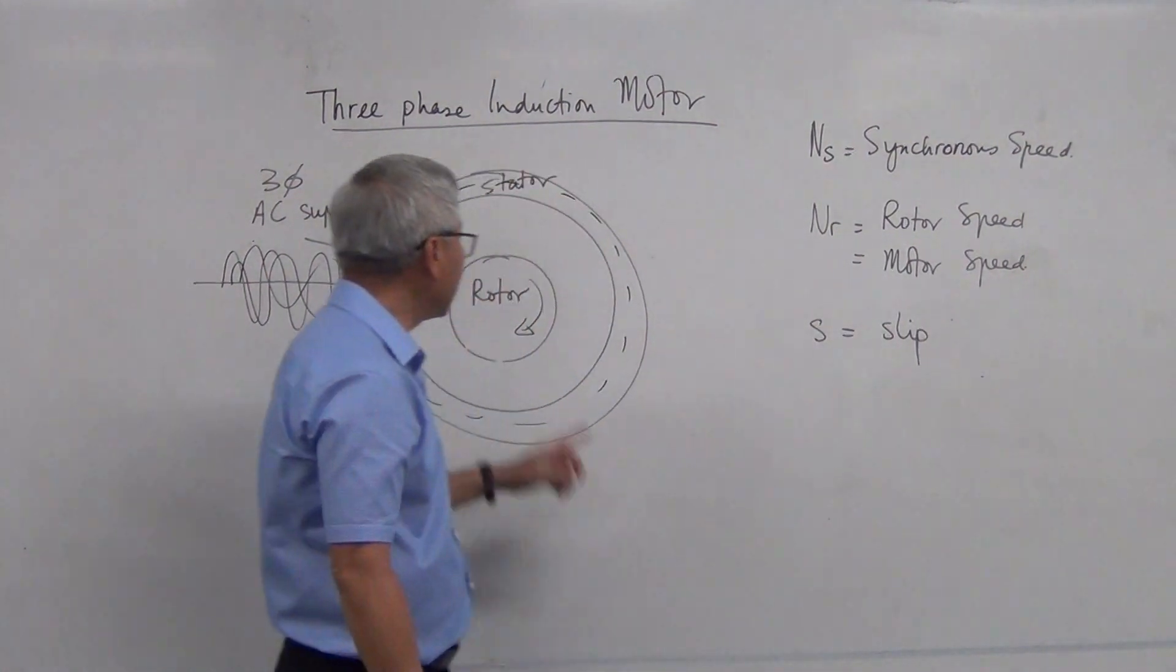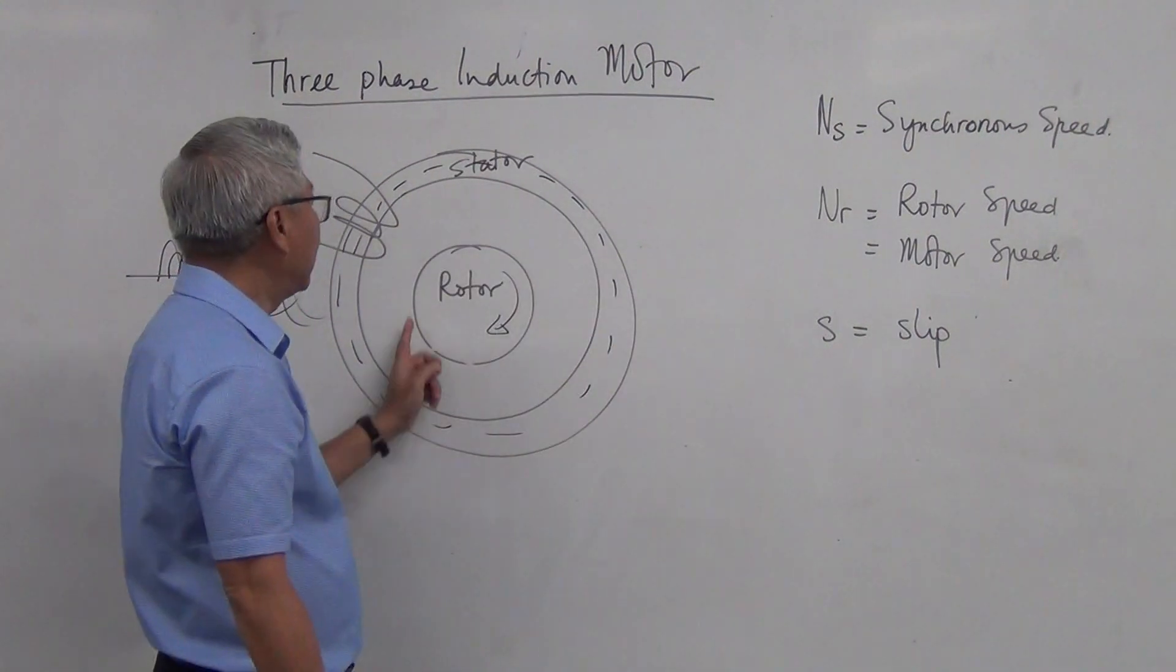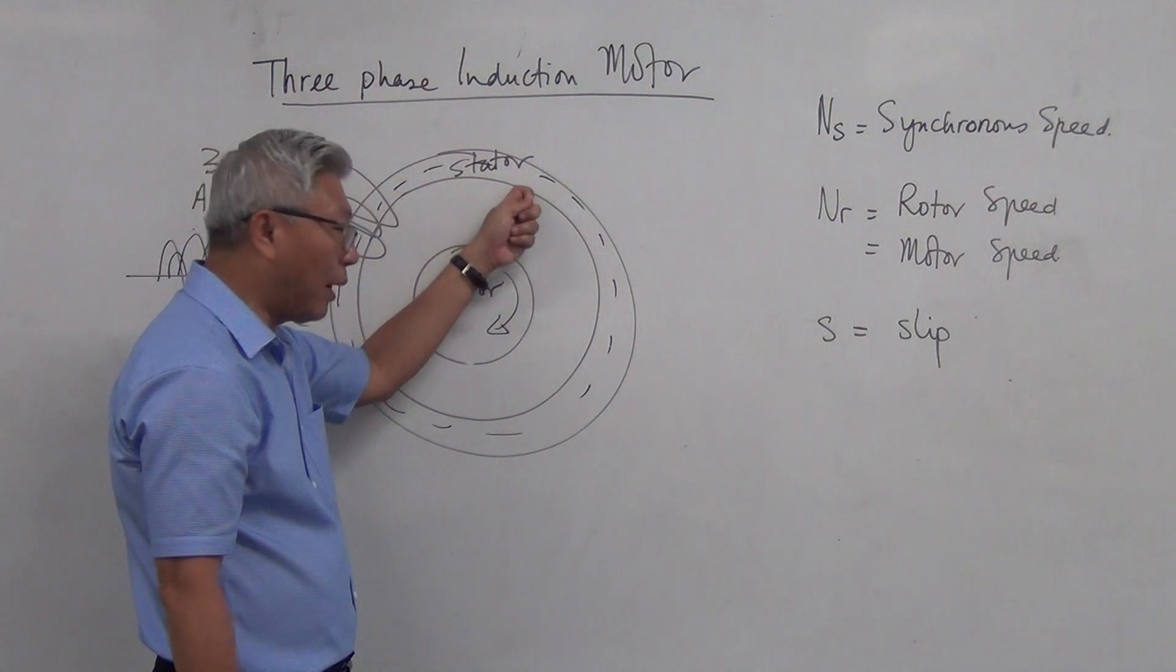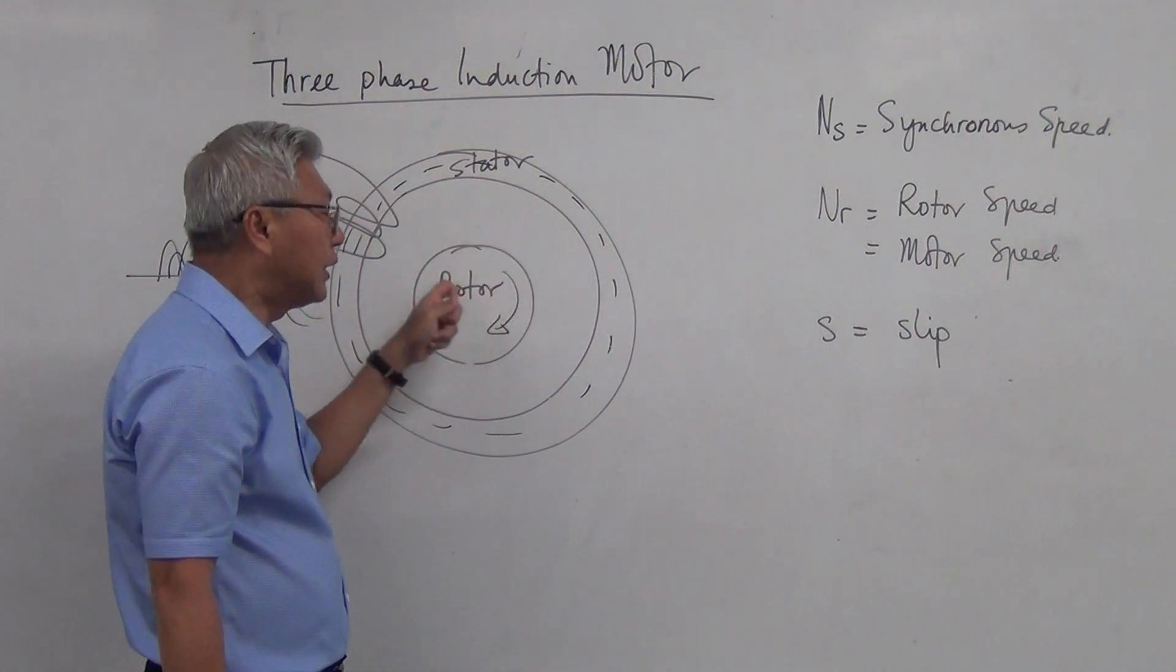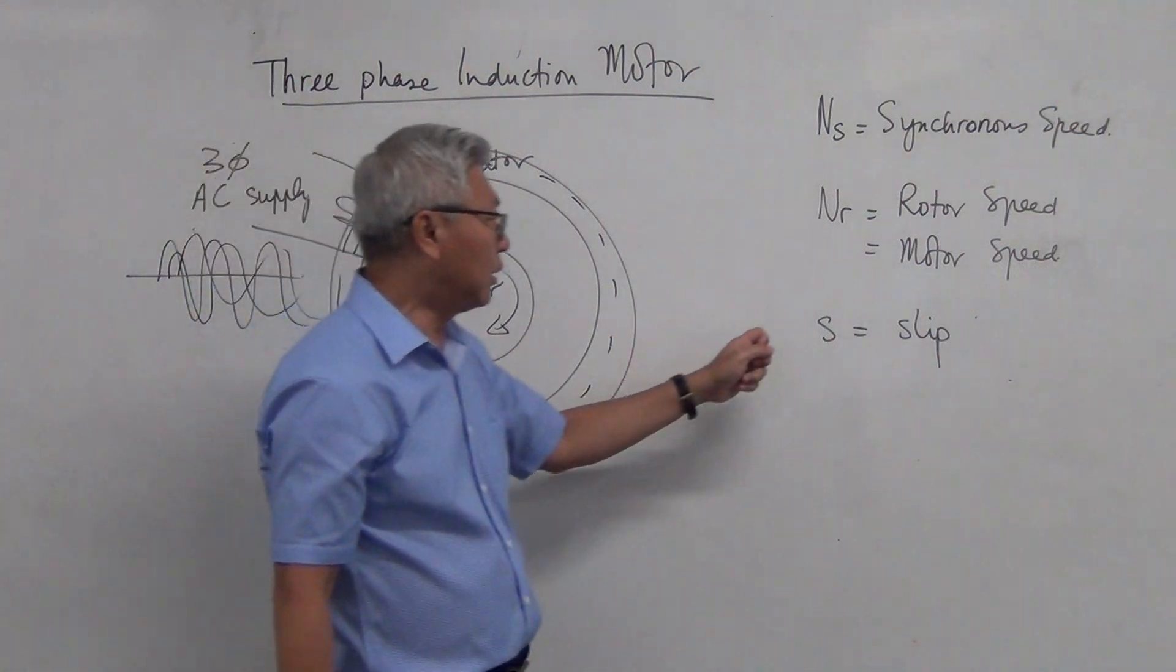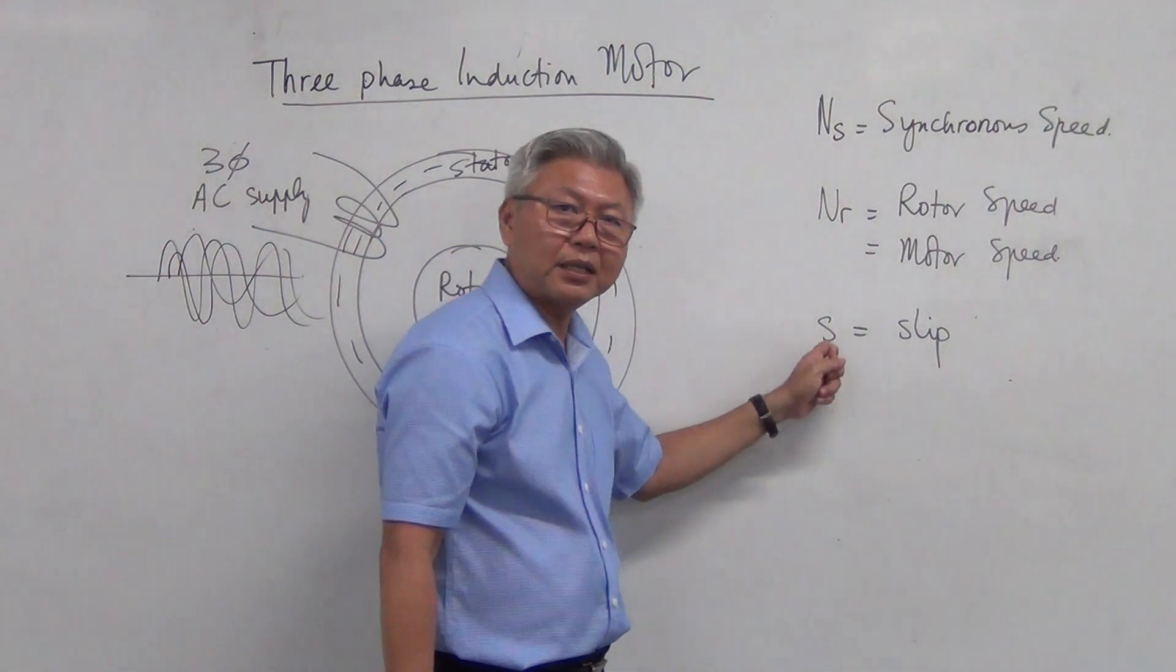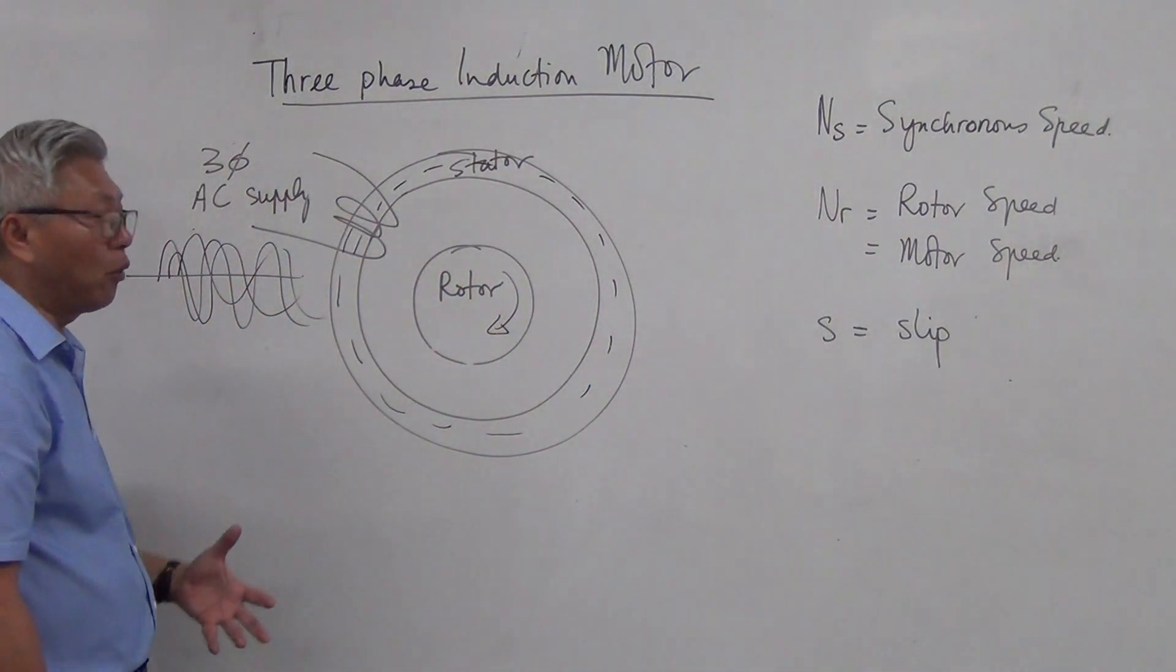And the synchronous speed, that is the speed of the magnetic flux. And the speed of the rotor, they are very close to one another. They are rather close. The difference is measured by the ratio called slip. Sounds a little bit abstract, isn't it? Let us go through it one more round.